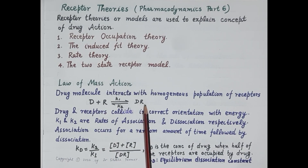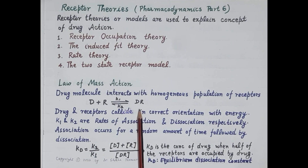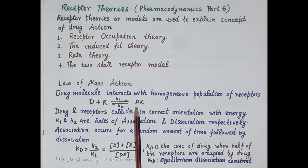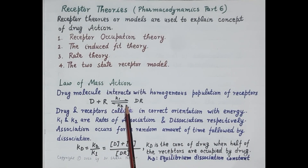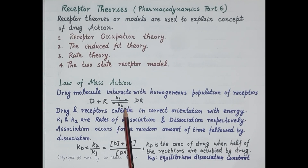When the drug and receptor collide with each other in the correct orientation and with sufficient energy, this results in the formation of a drug-receptor complex. After some time, the drug dissociates from the receptor. So association occurs for a random amount of time, followed by dissociation. Equilibrium occurs when the rate of formation of the complex becomes equal to the rate of dissociation back to drug and receptor. The rate of association is k1 and the rate of dissociation is k2.